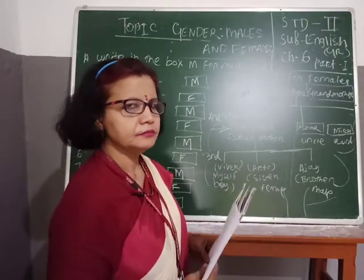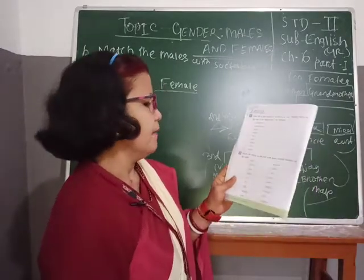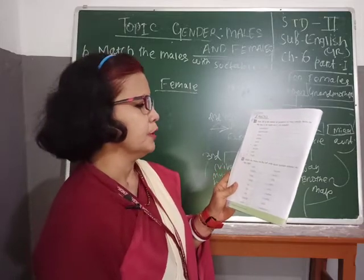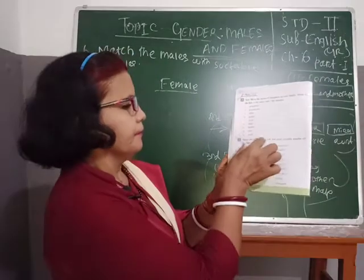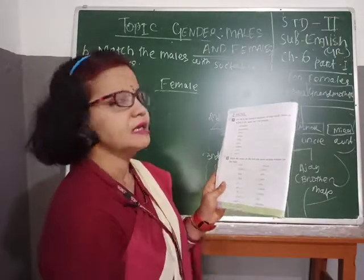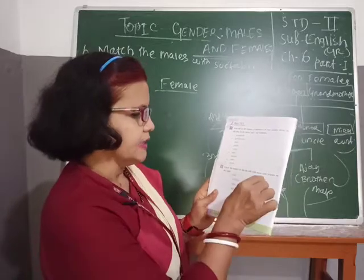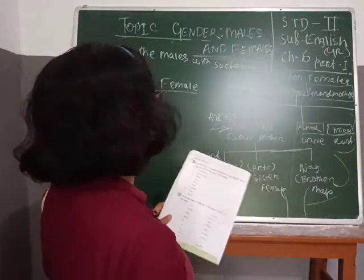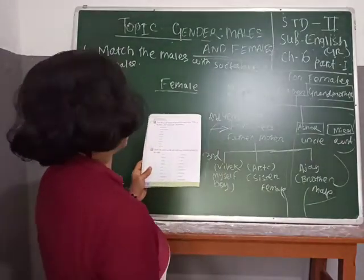Now we will do Book Work B. Match males on the left with the most suitable females on the right. The words on the left belong to male persons and the words on the right belong to female persons. We will write in the right place. Start.